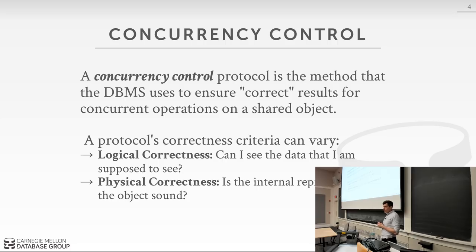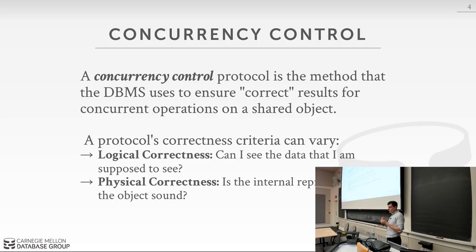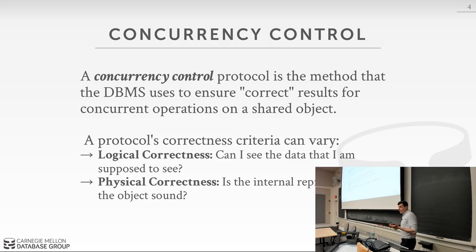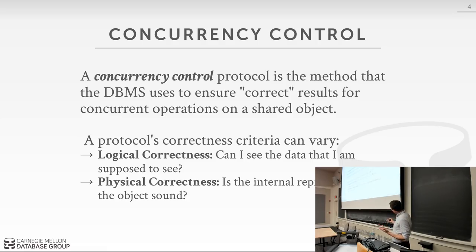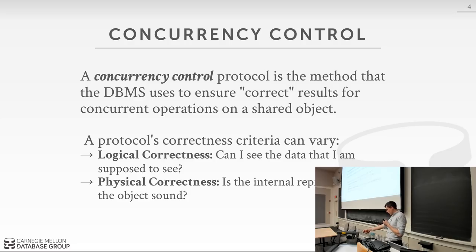The way we're going to protect our data structures is through a concurrency control protocol — a broad class of algorithms that software systems use to allow simultaneous threads to operate on the same object at the same time and ensure concurrent operations still produce a correct result. 'Correct' and 'thing' are both intentionally vague here — 'thing' could be a tuple, data structure, page, or table.